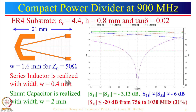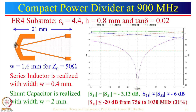Now let us look at an alternate way: a compact power divider design at 900 MHz on low-cost substrate. This is 50 ohm, 50 ohm, and 50 ohm. The series inductor is realized by a thin line (width 0.4 mm) and the shunt capacitance is realized by an open stub. An open short line acts as a capacitance.